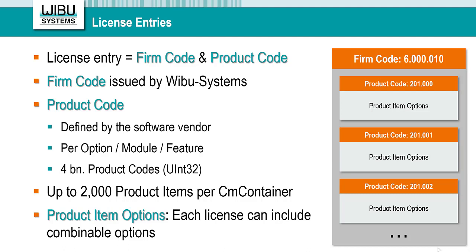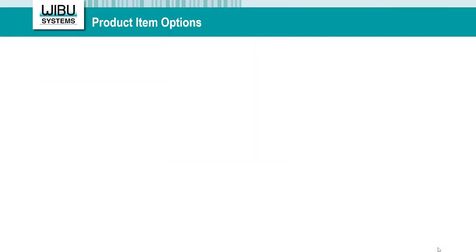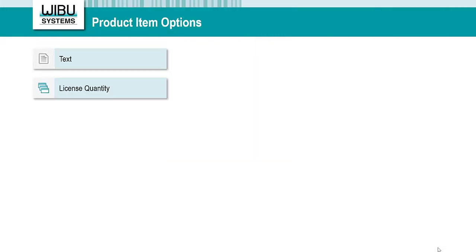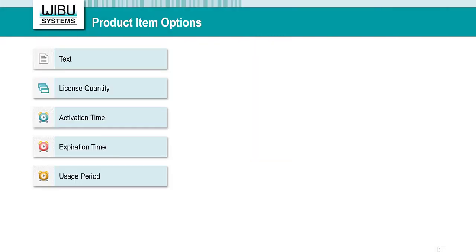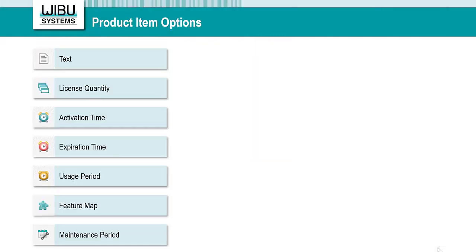Each Product Code is located inside a product item. You can store up to 2,000 product items, which means 2,000 Product Codes in one CM container. The product item is defined by the Product Code, and it can be defined further by a number of license options, called the product item options.